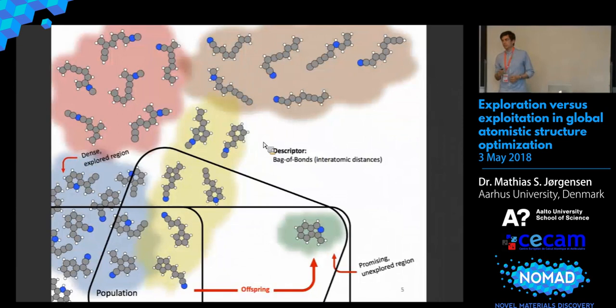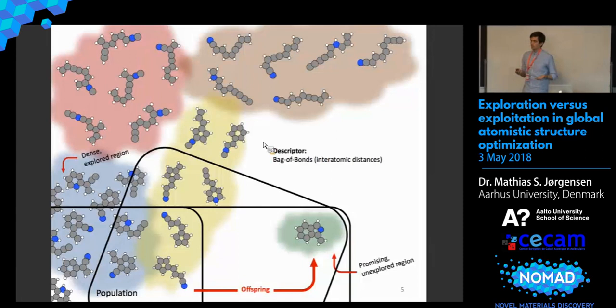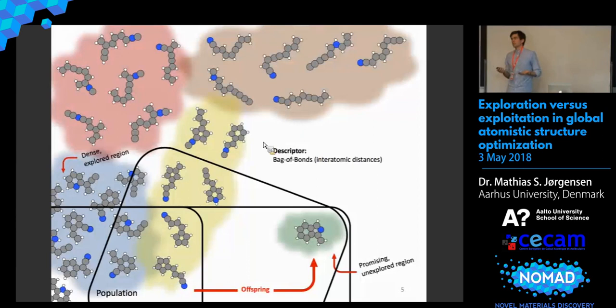Consider another scenario where, in the blue cluster, we've produced a lot of structures — it's now a dense, well-explored region, and it seems wasteful to continue probing this region. With the clustering, we can penalize structures in this region so that they exit the population, making room for other structures to escape this region of the search space. These two techniques are what we use to enhance the search of the evolutionary algorithm.